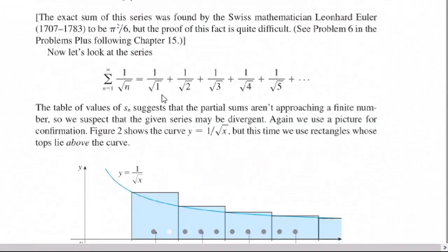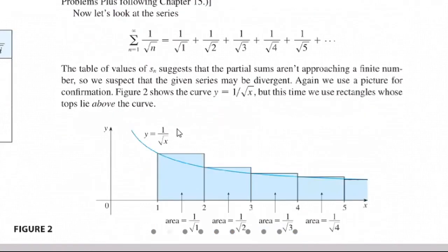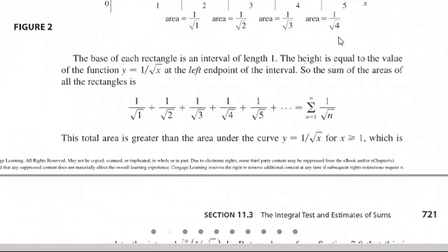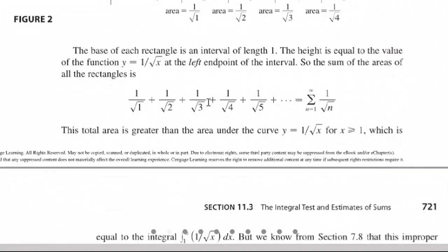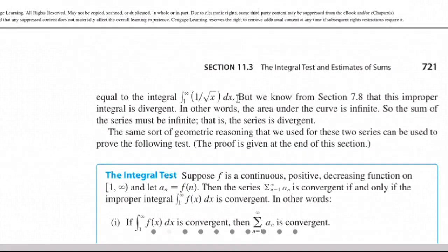There is another series: 1 over n, the harmonic series. When we look at partial sums of 5, 10, and more terms, the series is not converging — it keeps increasing. Again, we take the integral of this series. This time we draw rectangles using left-hand endpoints, and the integral from 1 to infinity of 1/x was shown in section 7.8 to be divergent. Since the integral is divergent, the series is also divergent.